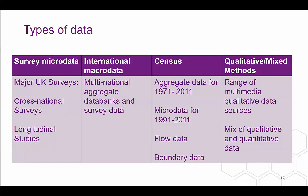We will be guiding you through the four types of dataset that you can find available through the UK Data Service. These are survey micro data, international macro data, census data and qualitative and mixed methods data. Survey micro data includes major UK surveys, both cross-national and longitudinal. International macro data includes multinational data banks and survey data. Census data is derived into aggregate data for 1971 to 2011, micro data for 1991 to 2011, flow data and boundary data. The qualitative and mixed methods section covers a range of multimedia qualitative sources and a general mix of quantitative and qualitative data.